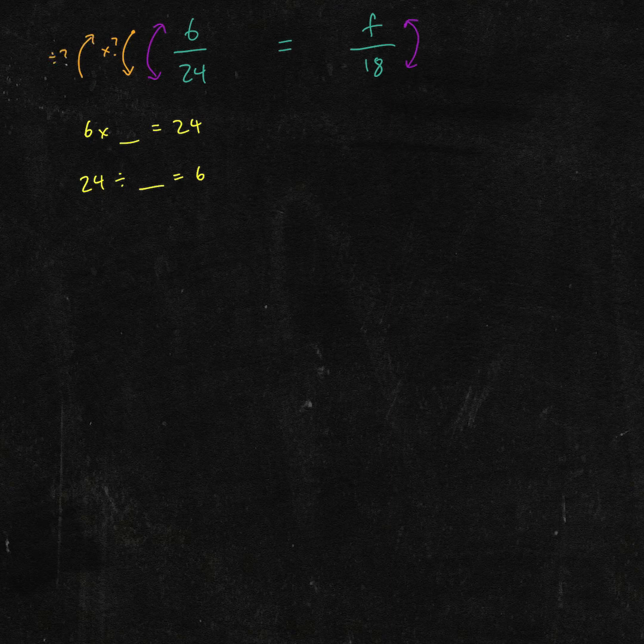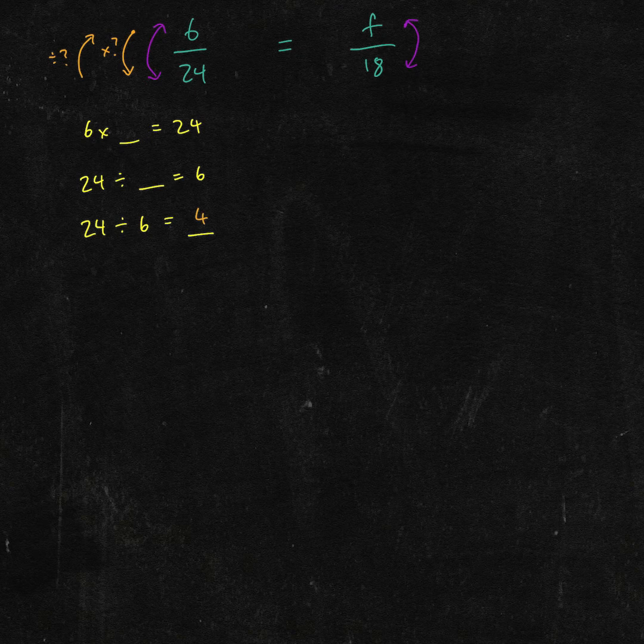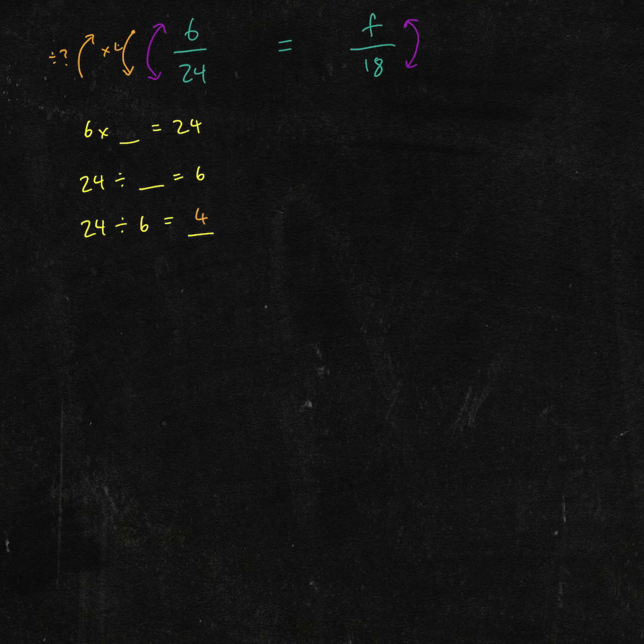Now, another way to write this would be 24 divided by 6 equals what, which we know is 4. So to get from 6 to 24, we times by 4.